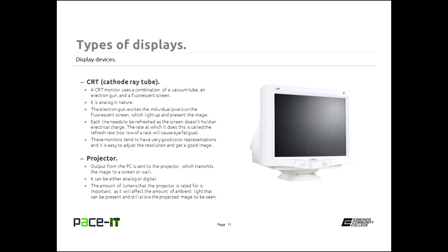Regarding whether CRT is the only example of analog — you can still buy LCDs that do not accept digital input, so LCD and CRTs are both examples. I have yet to see an LED display that does not accept digital. Back to the CRT: the electron gun scans back and forth rather rapidly, painting or exciting the fluorescent screen a line at a time, or a couple of lines at a time, usually from top to bottom.